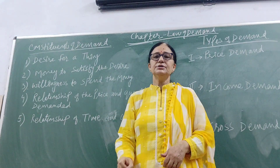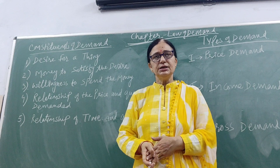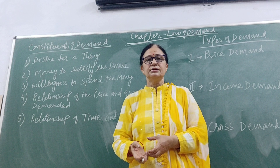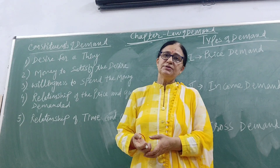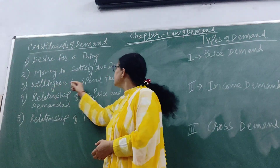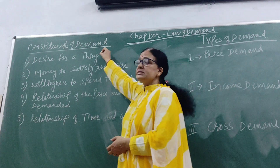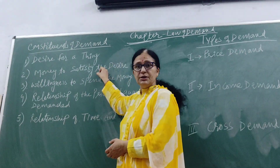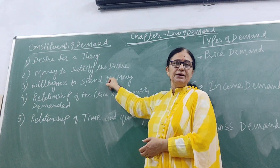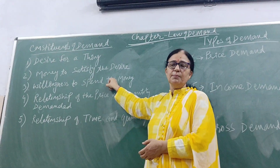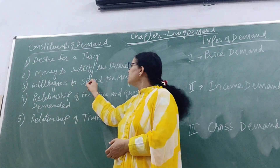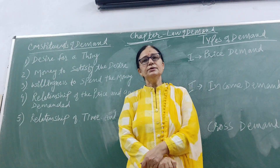Second is money to satisfy the desire. If we want to buy that commodity, we must have an adequate amount of money — the purchasing power to buy it. For example, we want to have a car; that is our desire, and we also have sufficient money to buy it. Third is willingness to spend the money. If there is desire and money but we are not willing to spend it, that will not be a demand.